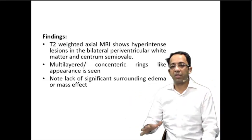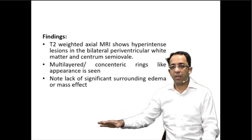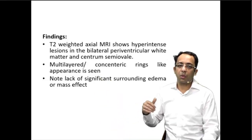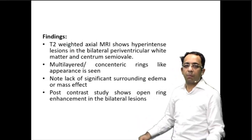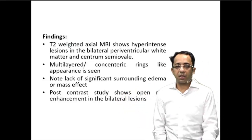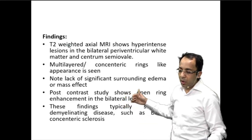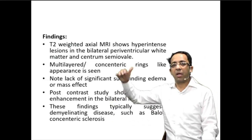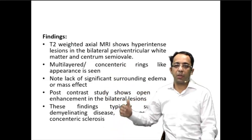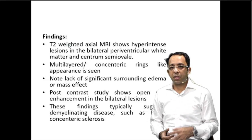Remembering the history, it was a monophasic illness — not a relapsing-remitting disorder. So we are looking at a monophasic demyelinating illness, severe, causing concentric ring-like appearances. The post-contrast image bilaterally showed that open-ring-like enhancement. The diagnosis is what is called Balo's Concentric Sclerosis — the alternate bright and dark ring-like appearance with open ring enhancement, lack of mass effect, lack of edema, and monophasic illness.